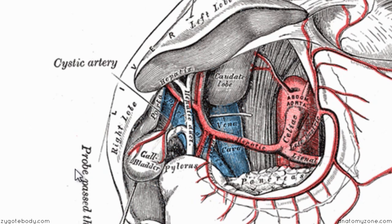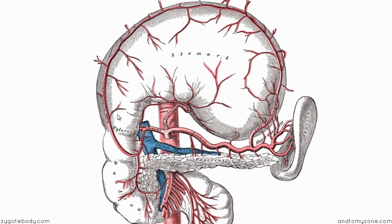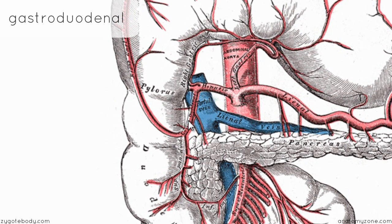Looking at the gastroduodenal artery in the other diagram — this is the descending branch, the gastroduodenal artery. Before it descends, it sometimes gives off a branch called the supraduodenal artery, which supplies the top part of the duodenum. You've got the pylorus of the stomach and the duodenum with its C-shape sitting around the head of the pancreas.